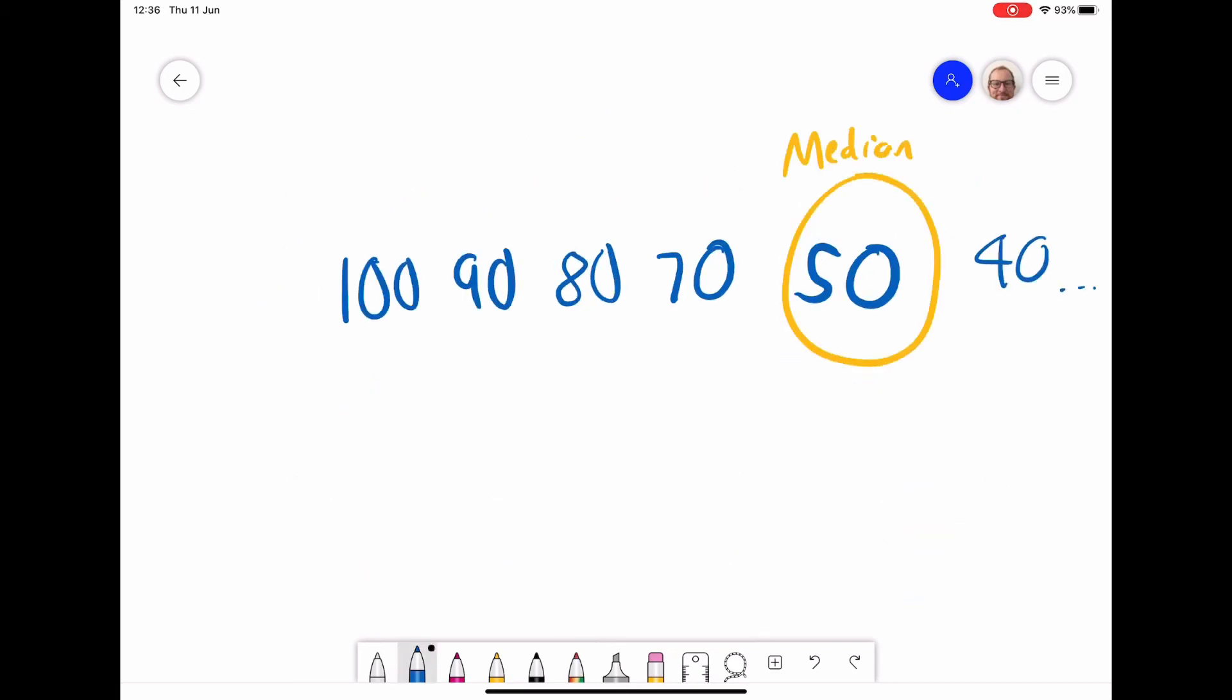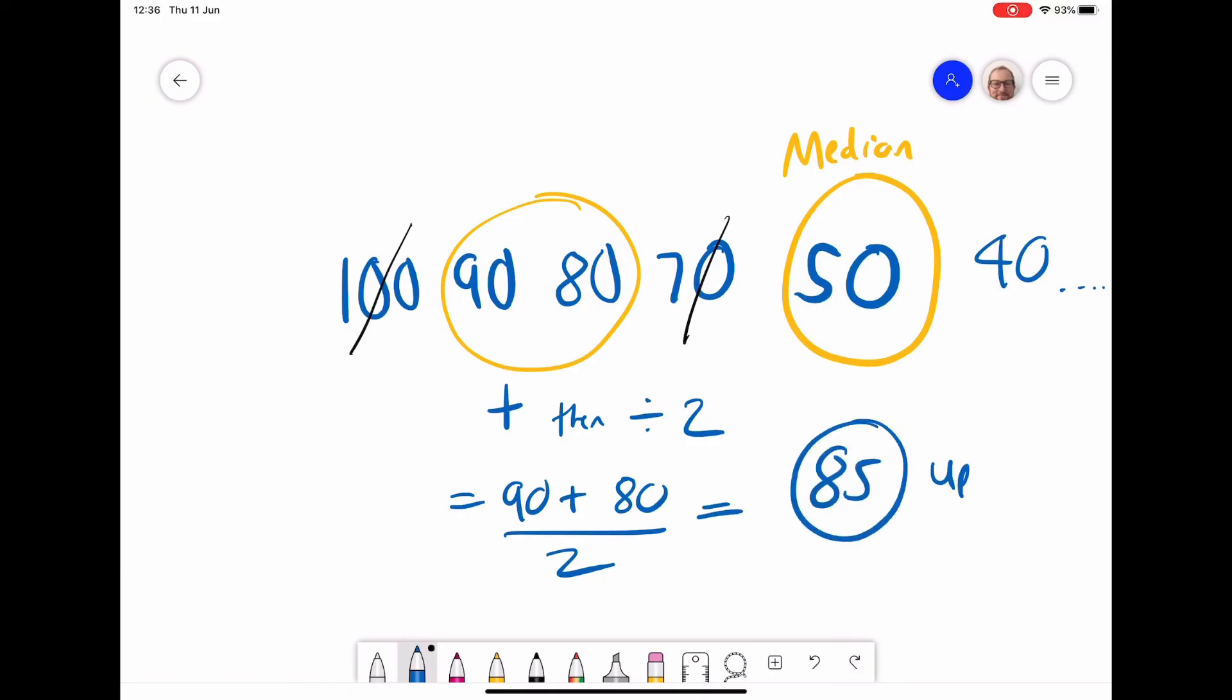Again, when you're trying to find the upper quartile, lower quartile, you might come across this issue where you would have two numbers—you don't have an isolated number. So again, all you would do is find the middle, and you do that by adding them up and dividing by two. So the middle of 90 and 80 would be 85. So that would be your upper quartile, and you'd have to do the same for the lower quartile as well.